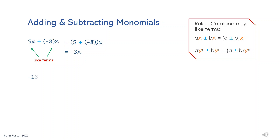Let's do another example. Subtract negative 13y cubed minus 10y cubed. Again, both terms are like. So go ahead and subtract negative 13 minus 10, which is negative 23, then bring in the y cubed.